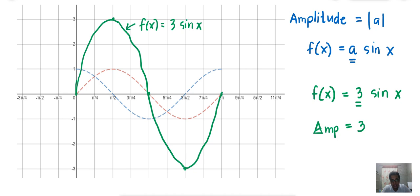So, the height of the wave is affected by the presence of the constant multiplied to the function. This is also true if we have a cosine function. The cosine function will also have a different height if there is a constant.